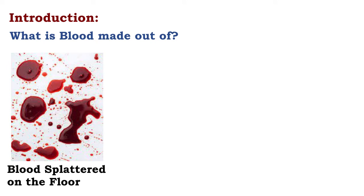By way of introduction, I want to ask you the question: what's blood made out of? On the left, we see blood splattered on the floor. One would think that blood is homogeneous, liquid, and red in color.